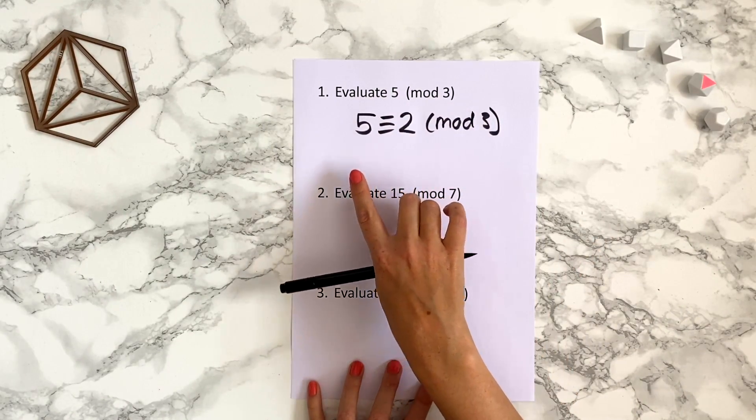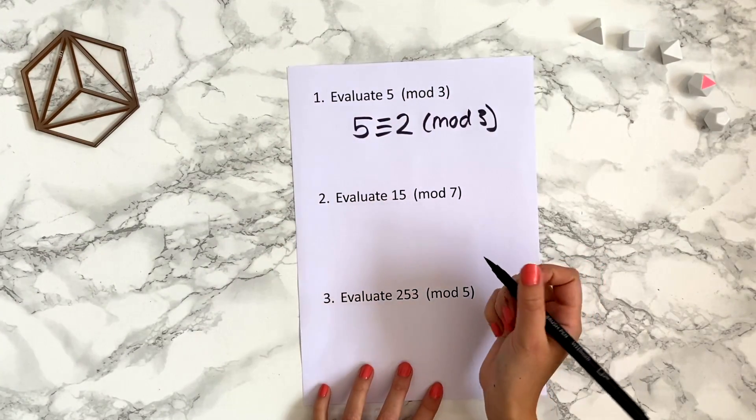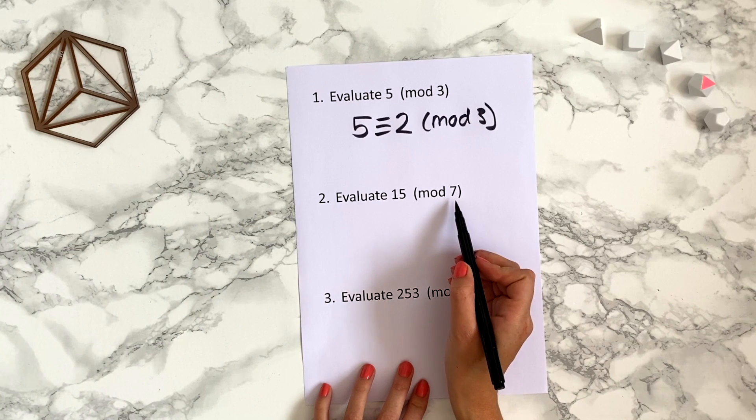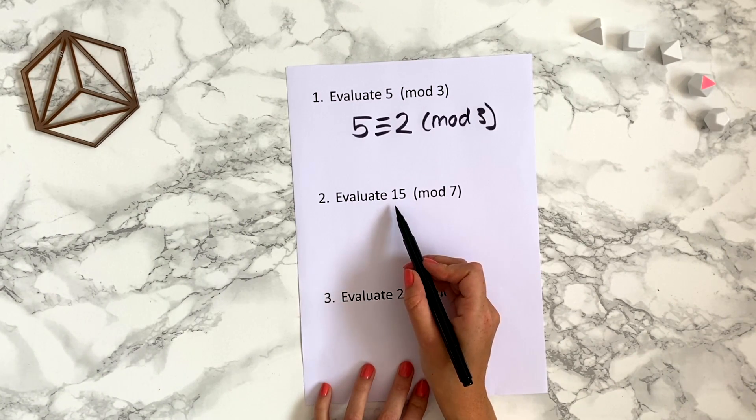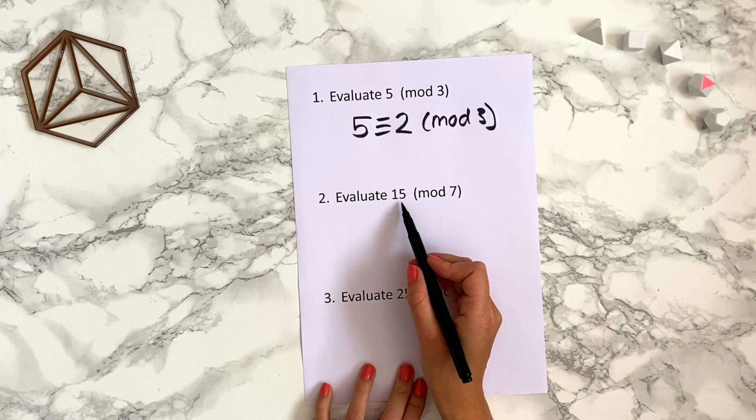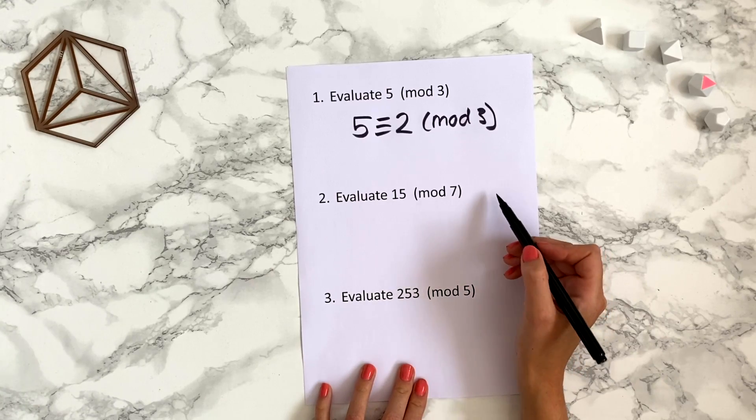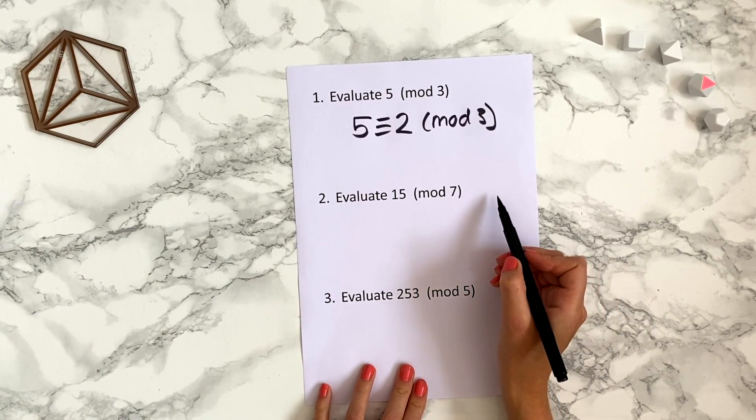You can also think about this as the remainder when you divide 5 by 3 is 2. Now we want to evaluate 15 modulo 7. So we've got to think what would 15 o'clock be on a 7 hour clock. 15 is 1 more than 14 and 14 is divisible by 7.